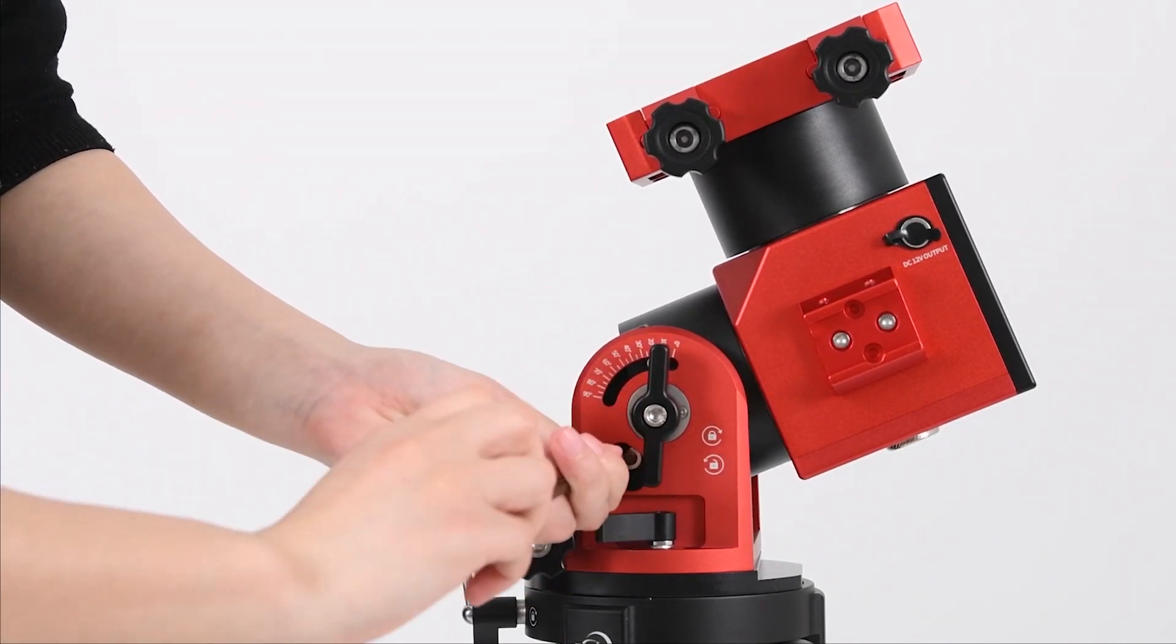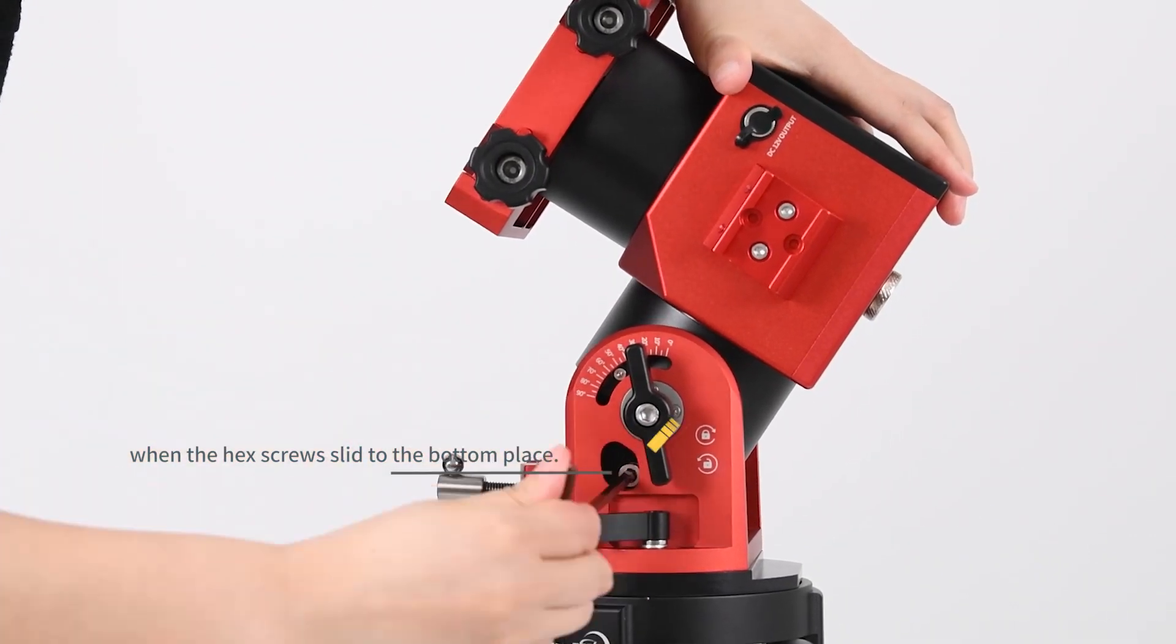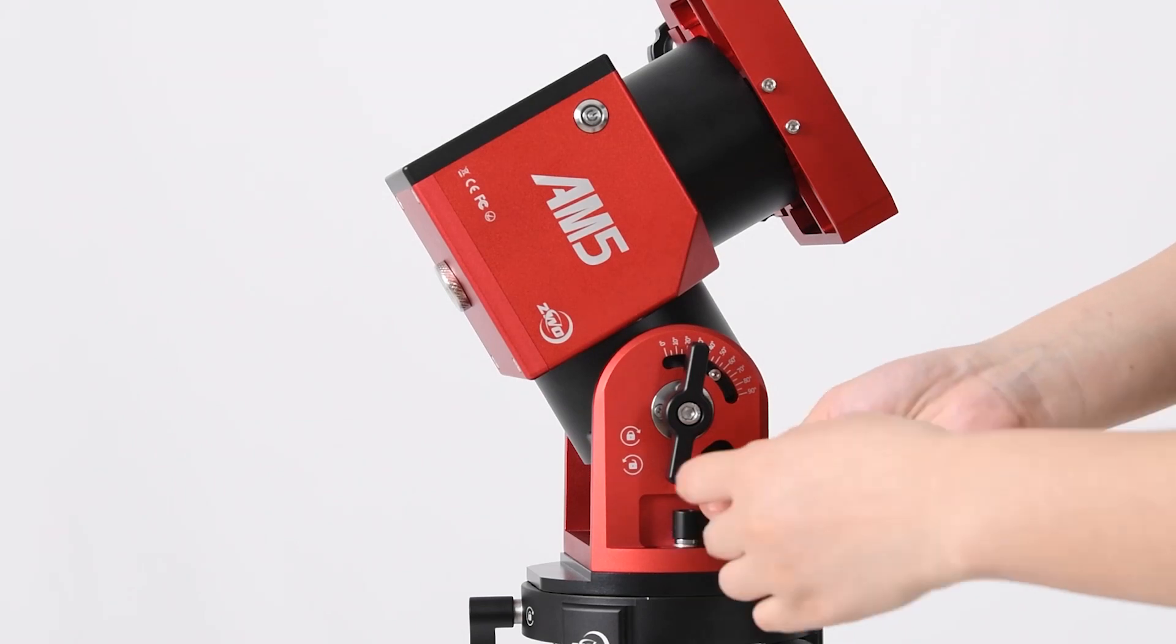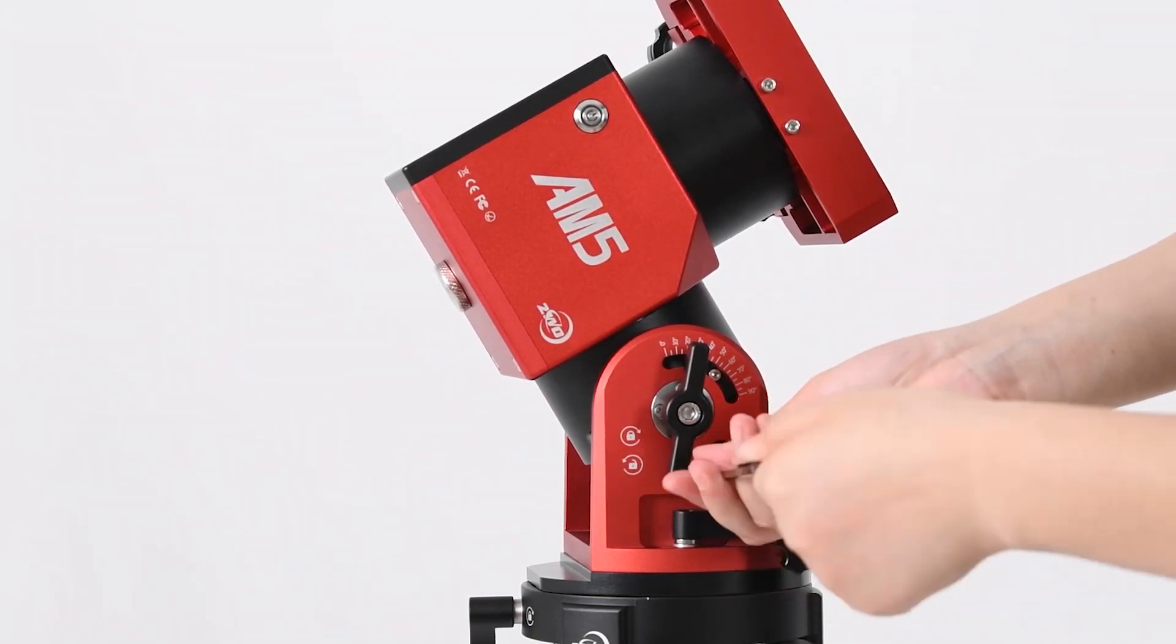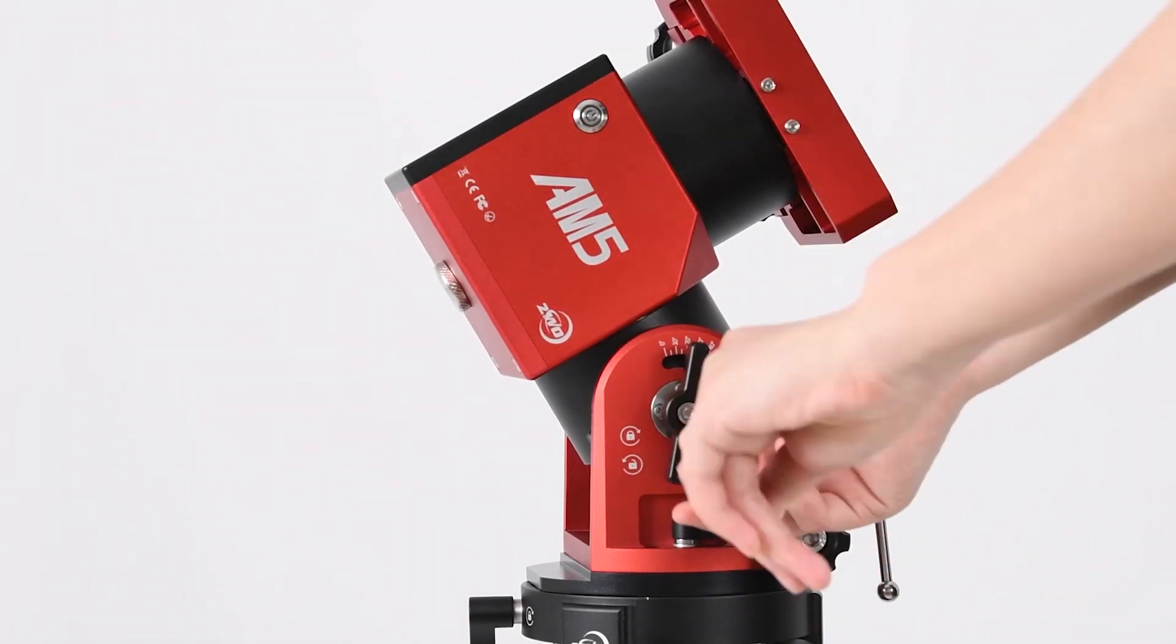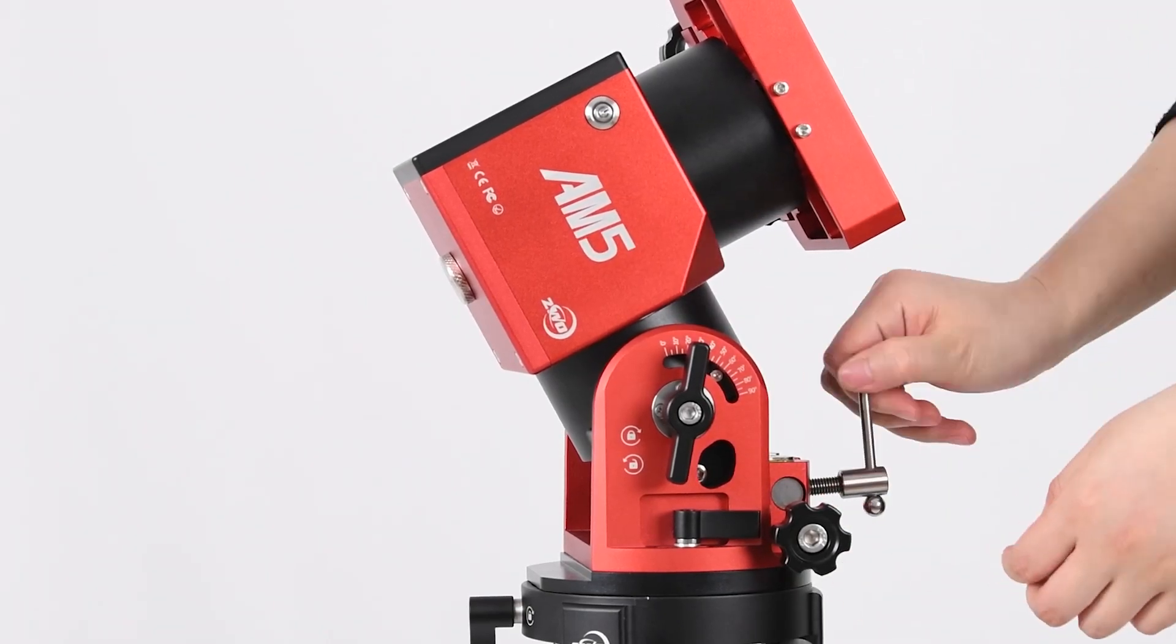Use the hex wrench to loosen the hex screws on each side of the mount. Lift the mount head up until you see that the two hex screws have shifted to the bottom of the openings. At this point, the latitude scale will read 55 degrees. Continue rotating the lever to set the altitude scale to 45 degrees to 90 degrees. Tighten the tension grips and refasten the hex screws once the procedure is complete.